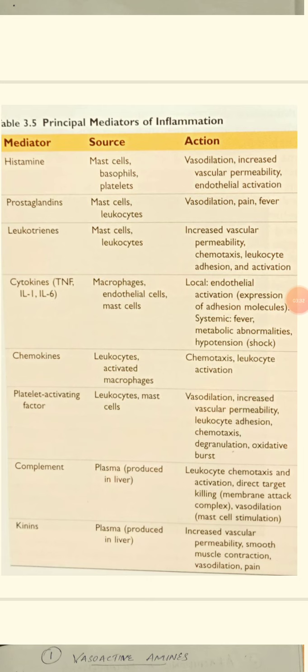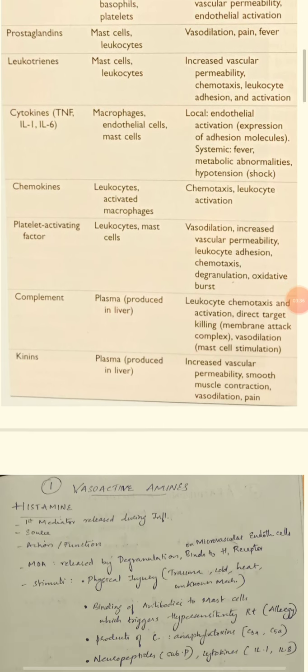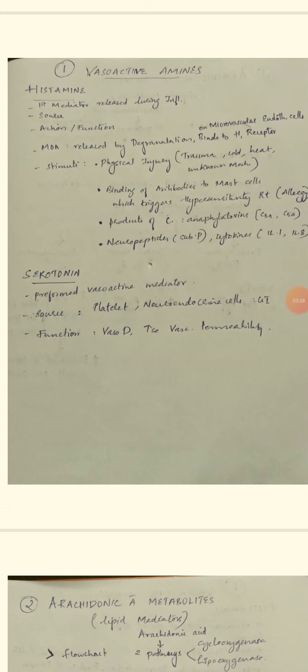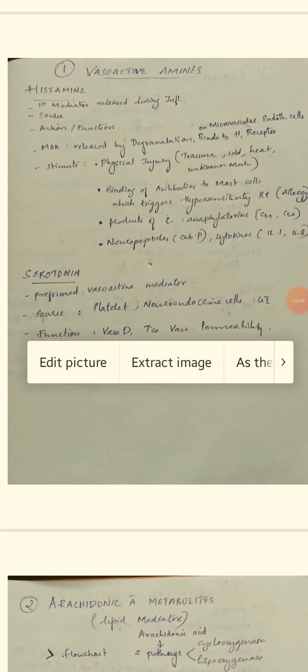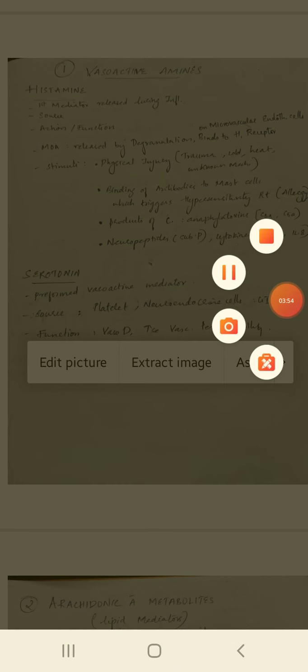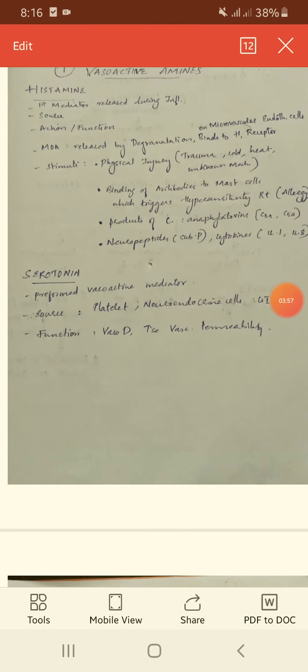Vasoactive amines: Histamine is the first mediator released during inflammation. Its source is mast cells and platelets. Its action is vasodilation and increased vascular permeability. The mechanism of action is degranulation and release.